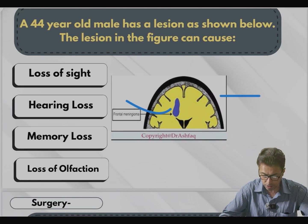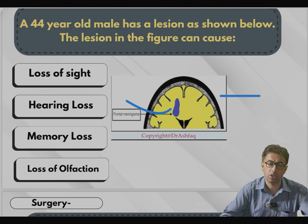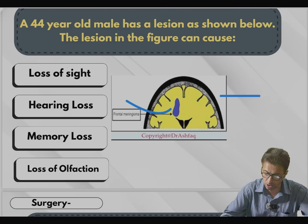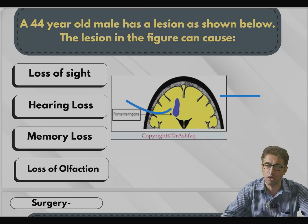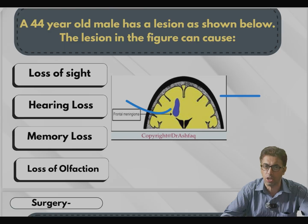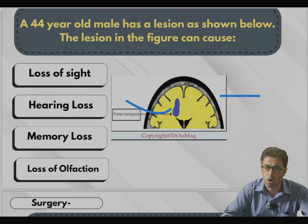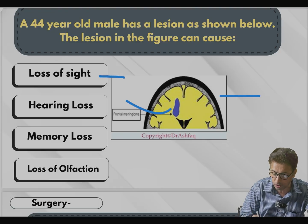The options are: loss of sight, hearing loss, memory loss, loss of olfaction. This needs detailed surgical knowledge of surgical anatomy of the brain. It is usually the frontal lobe, and the question diagram shows a frontal meningioma. Loss of sight would not be a lesion in the frontal lobe — loss of sight would be an occipital lobe lesion, specifically area 17, which can cause visual blindness. Cortical lesions of the occipital lobe cause blindness or visual loss. Hearing loss — the auditory cortex is not located in the frontal lobe — so the second option is also incorrect.